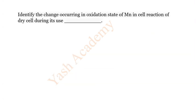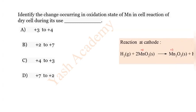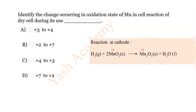Question 16: Identify the change occurring in the oxidation state of Mn in the cell reaction of a dry cell during its use. Options: A) +3 to +2, B) +2 to +7, C) +4 to +3, D) +7 to +2. The correct answer is C) +4 to +3.